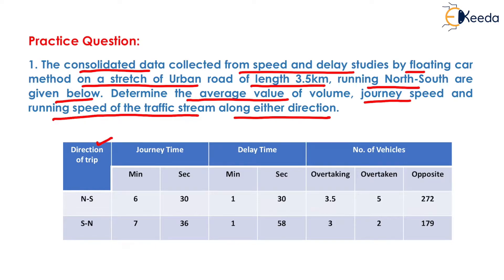In this table, direction of trip, journey time, delay time, and number of vehicles are given. For north-south, the journey time is 6 minutes 30 seconds, delay time is 1 minute 30 seconds, and number of vehicles overtaking is 3.5, overtaken is 5, and the opposite is 272. Similarly, data for south-north is also given. Now we have to solve this question.